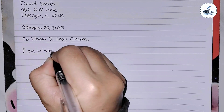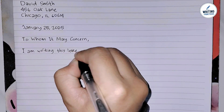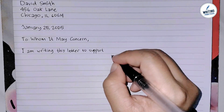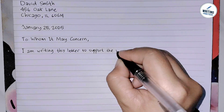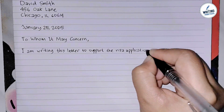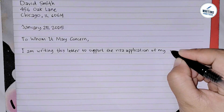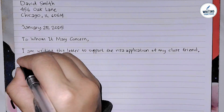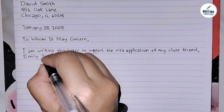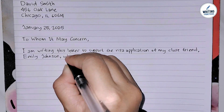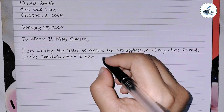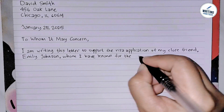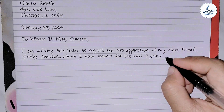In the first paragraph, which is the introduction, you need to introduce the reason for writing this letter. You also need to explain your relationship to the applicant, mention how long you have known the applicant, and provide a brief statement of their character. Write a sentence explaining that you are writing to support the visa application of your friend, specifying the applicant's name and how long you've known them.